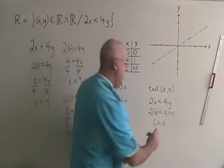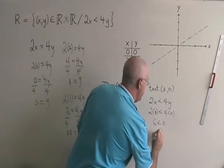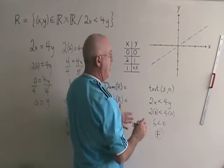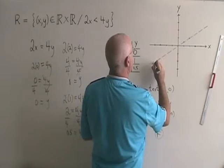This is false. When I get a false from my test point, it means I shade away from the test point. That means I am shading this up.